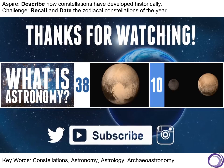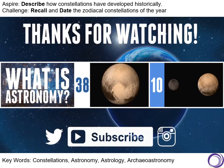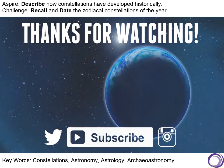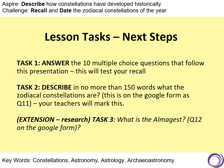That summarised our constellations much more simply than I have done in the last 35 minutes — that video was approximately four minutes long. We've got three tasks. Task one: answer the 10 multiple choice questions on the Google quiz, which will be open this week and open for a week — that will test your recall. Task two: describe in no more than 150 words what the zodiacal constellations are — not just listing them, but describing what they are.